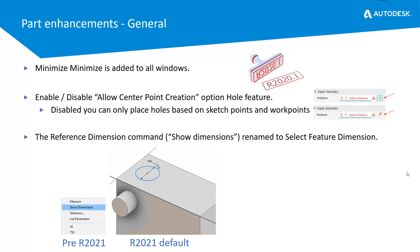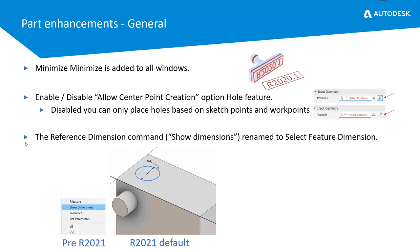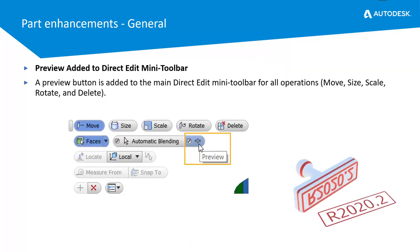Minimize has been added to all windows, and you can enable or disable center point creation for hole features. One nice enhancement is the reference dimension command — you can now click down and choose 'select a feature dimension', choose your feature, and directly select that dimension from a feature. The preview button has also been added to the direct edit mini toolbar, which now works with move, size, scale, rotate, and delete.